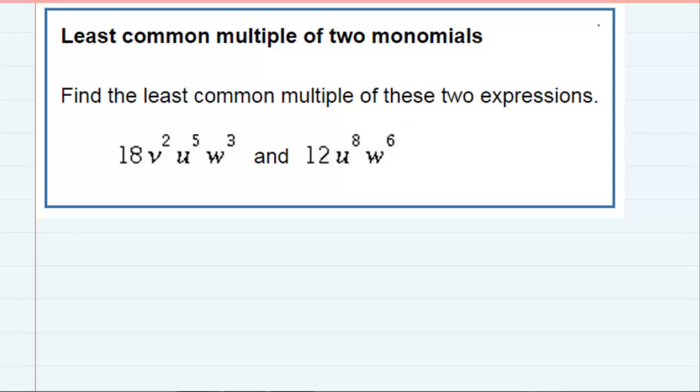Least common multiple of two monomials. We're asked to find the least common multiple of these two expressions, and I'm going to start by looking at the coefficient parts of these expressions, taking the 12 and the 18.